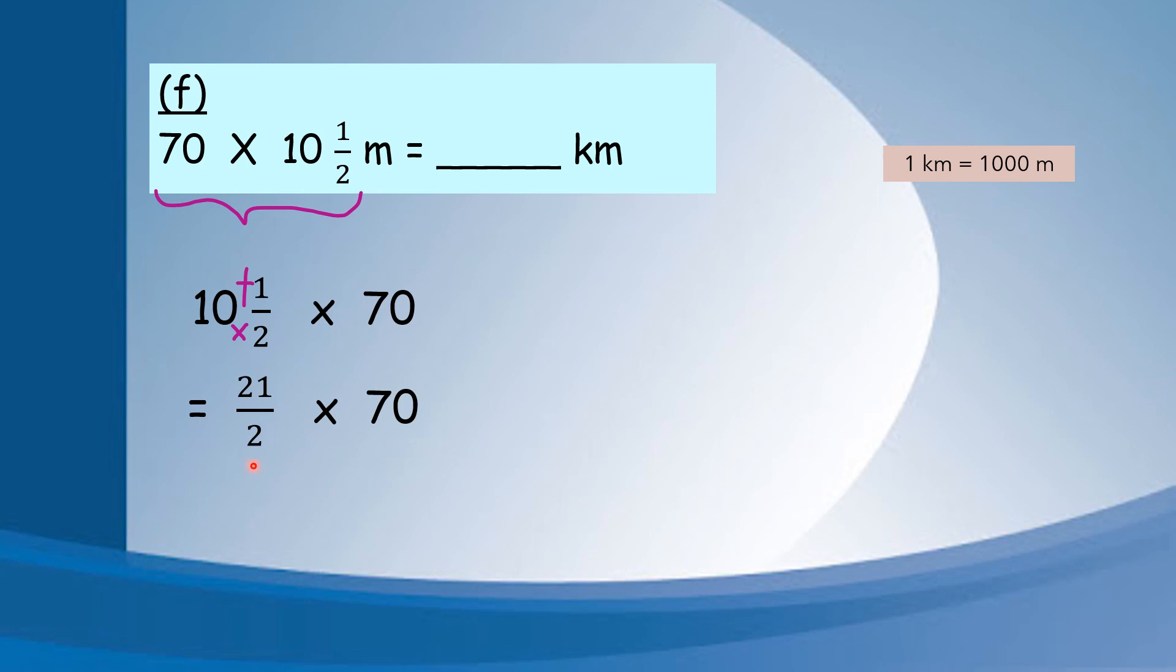Then 2 can divide by 2, 70 also can divide by 2. So we can simplify. 2 divided by 2 is 1, 70 divided by 2 is 35. Then 21 times 35. You need to calculate: 21 times 35. You will get 735 meter. Because this is m.